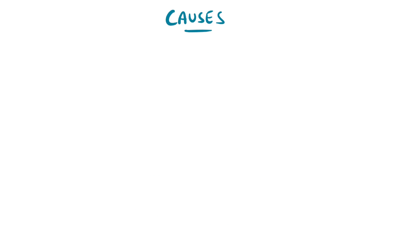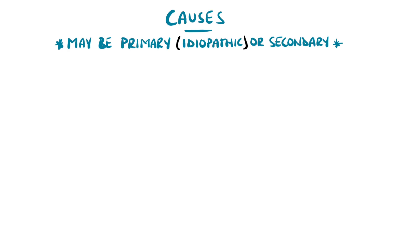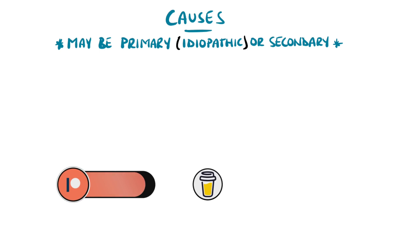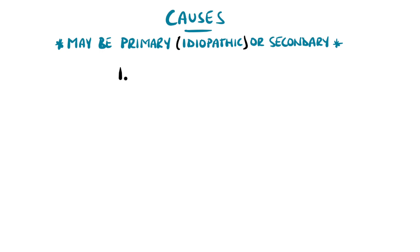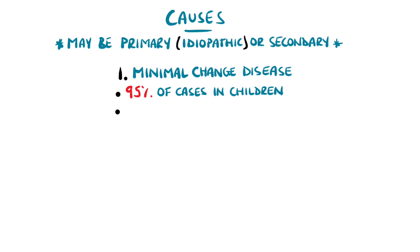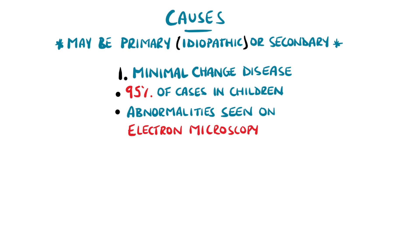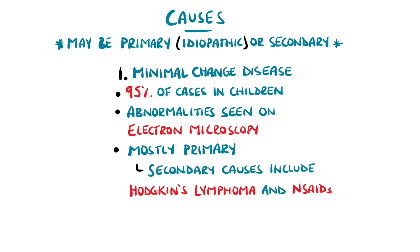The causes of nephrotic syndrome are divided into primary and secondary, where primary means a pathology affecting the kidney directly, often idiopathically, which means without a clear cause. Secondary causes are where a condition affecting another part of the body also has an effect on the kidney. Histological patterns are often used to describe the causes, such as minimal change disease, which is the most common cause in children, getting its name because only with an electron microscope do pathological findings become visible. It is mostly primary, but can be associated with secondary causes such as Hodgkin's lymphoma or the use of non-steroidal anti-inflammatories.